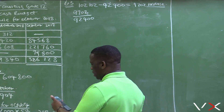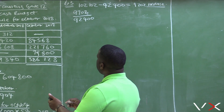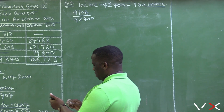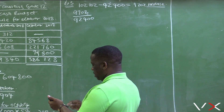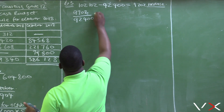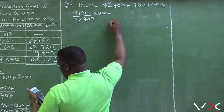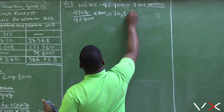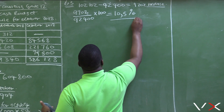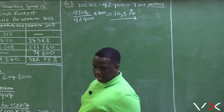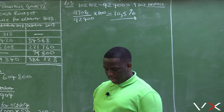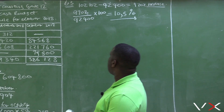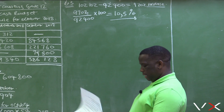So that's $9,702 divided by $92,400 multiplied by 100. The percentage increase is 10.5%. The business is planning to increase the salaries for sales assistants by 10.5%, and there is a follow-up question to this one.